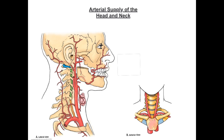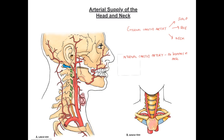Let us now consider the branches of the external carotid artery. The external carotid artery and its branches provide the main arterial supply to the scalp, face, and neck. The internal carotid artery, once it arises at the bifurcation of the common carotid, ascends through the neck without giving any branches at all. Instead, it will run through the base of the skull in the carotid canal and give its branches when it is within the intracranial cavity.